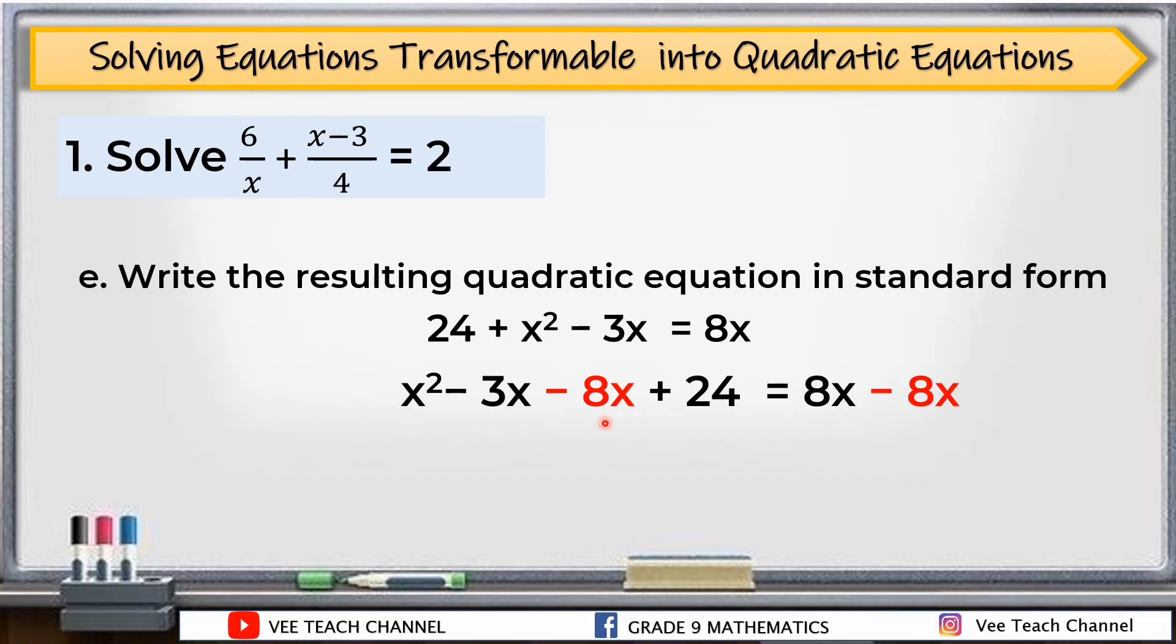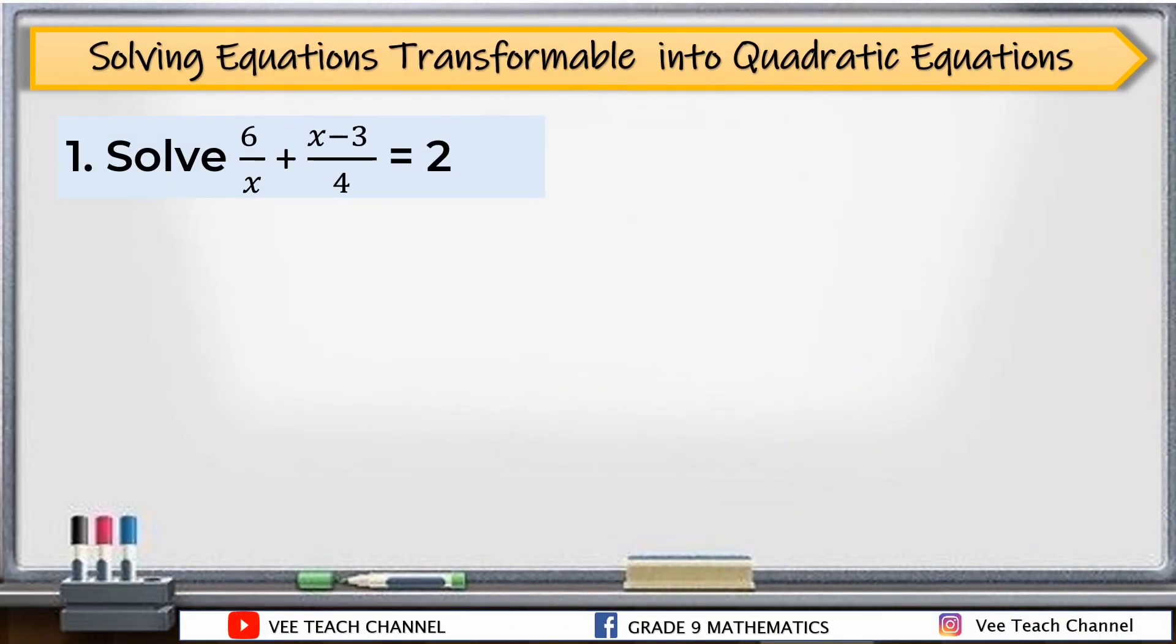Remember, we need to write the quadratic term x² first, followed by the linear term, then the constant term. Let's simplify: -3x - 8x is -11x. So we have x² - 11x + 24 = 0. This is now our standard form.